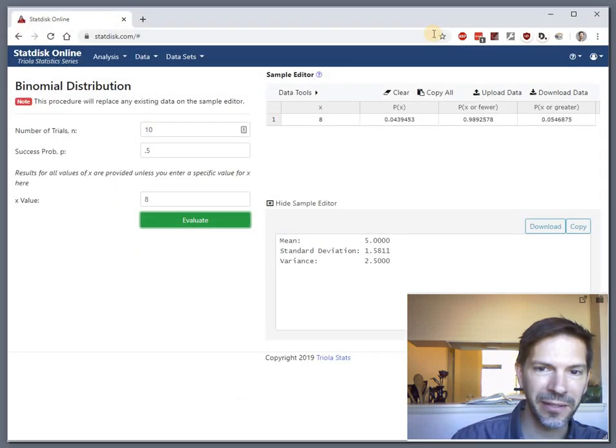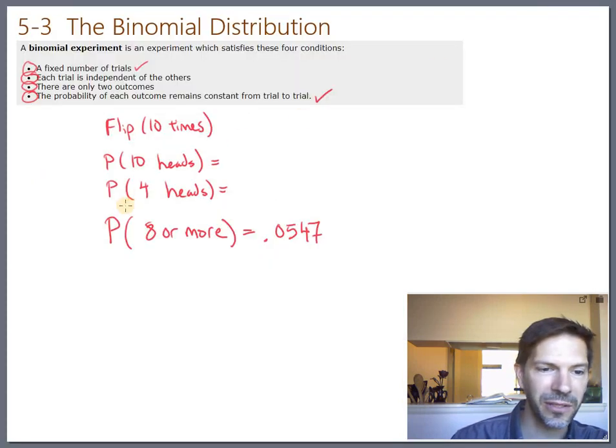And you'll notice StatDisk always gives you the probability just of 8 and then of 8 or fewer and then 8 or more. So it always gives you those three things. So let's go back and answer our other two questions, the probability of just 4 heads exactly.